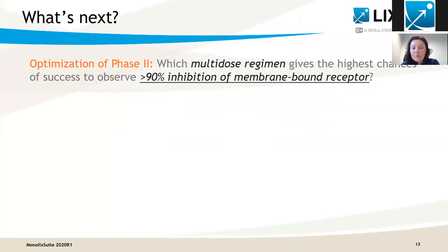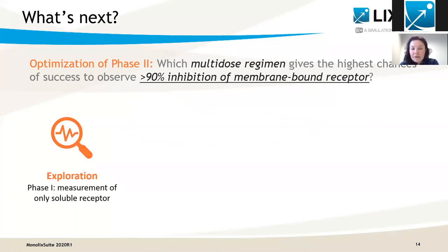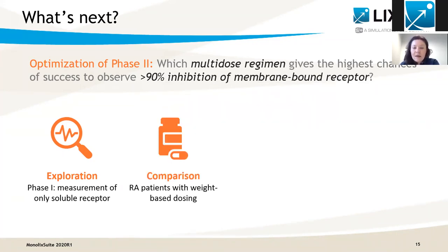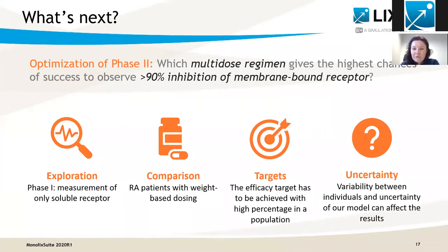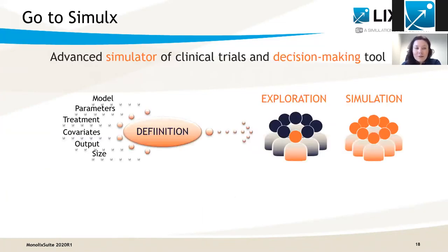Let's assume that 90% inhibition relative to baseline of membrane-bound receptor is a reliable predictor of clinical benefit. But in the phase one, we measured only soluble receptor. So the first question is: with which dose level can we observe this 90% inhibition? And then what is the situation in the population? Does a sufficient number of individuals reach the target? And if we enroll different individuals or if our model parameters have some uncertainty, can we still select a sufficiently promising dose to justify a phase three trial? To answer these questions, you go to Simulix, the advanced simulator for clinical trials and decision-making tool.